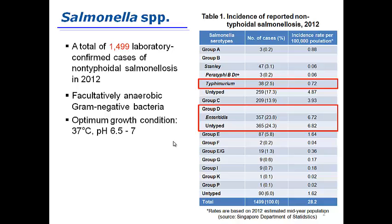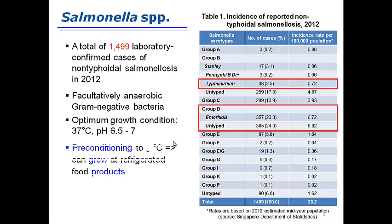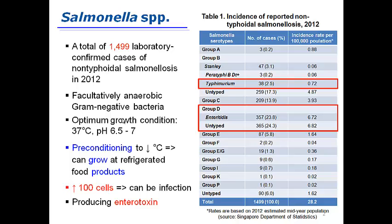These stressed conditions may enhance their resistance to stress. For this reason, preconditioning of Salmonella to low temperatures can pose a risk in refrigerated food products. Furthermore, Salmonella can be infectious with only more than 100 cells and can produce enterotoxin.